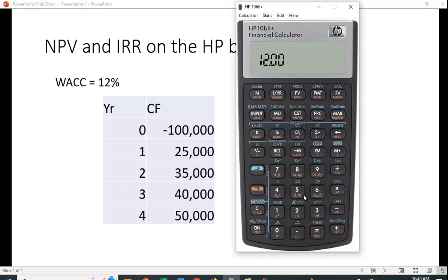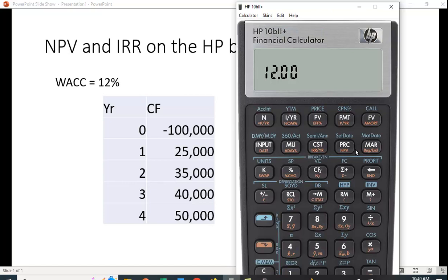We will simply compute it by, let me zoom up here a little bit. Right here under the PRC key is NPV. We can hit this rust colored down arrow function key and hit this. We get a net present value of 10,470.33. It's positive, so we want to accept this project.